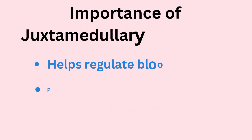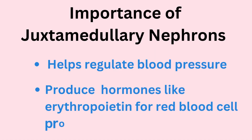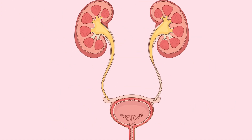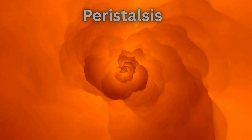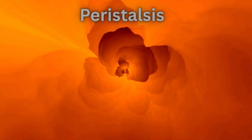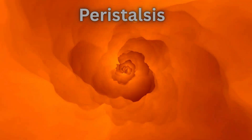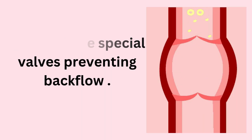Amazingly, this process also helps regulate blood pressure and produces hormones like erythropoietin for red blood cell production. Once urine is ready, it leaves the kidneys through the ureters, two muscular long tubes that connect each kidney to the bladder, using wave-like contractions called peristalsis, with special valves preventing backflow.